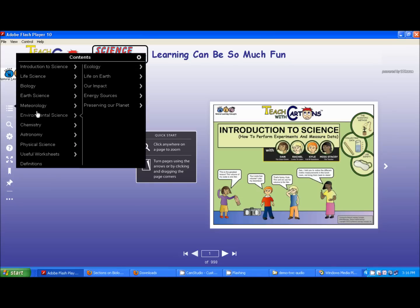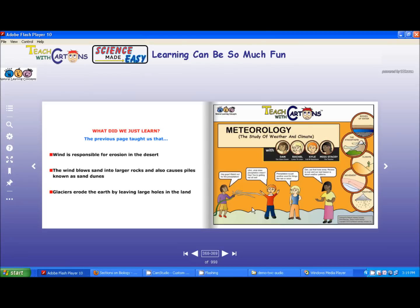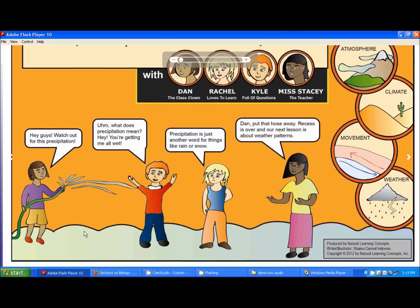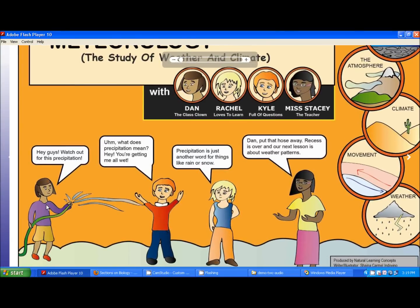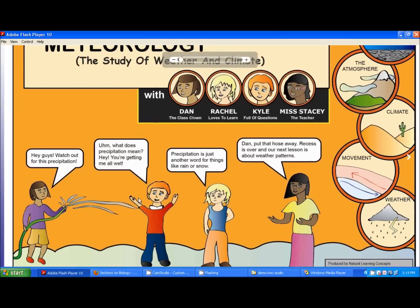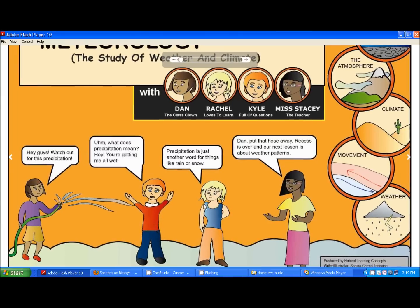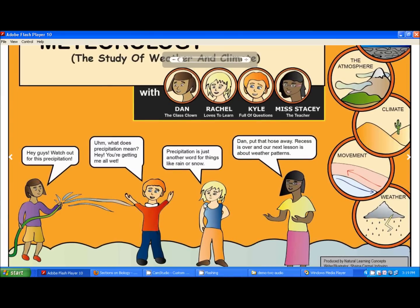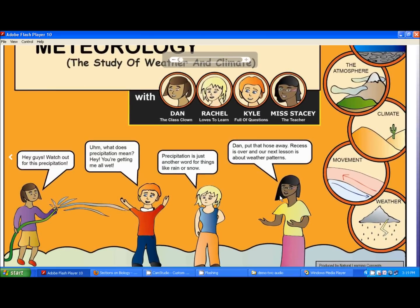By clicking the contents menu, you'll see that the software covers all the core areas of science. The characters are very specifically designed. Dan is the class clown who is always getting into trouble. Kyle tends to get all these terms mixed up and needs a lot of repetition and clarification. Rachel is a goody-two-shoes who absolutely loves to learn. The teacher accommodates all the various learning styles, which is exactly what you need for differentiated instruction.